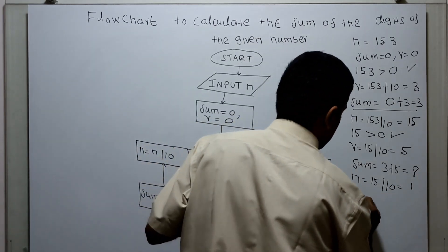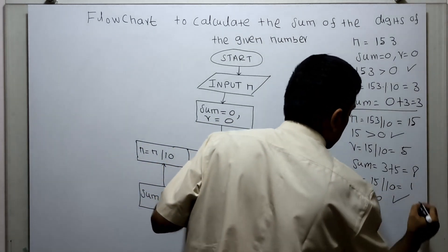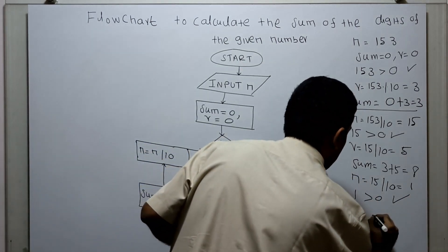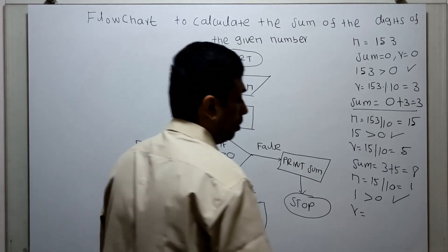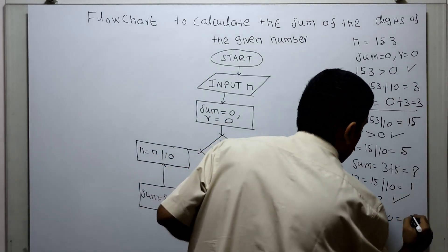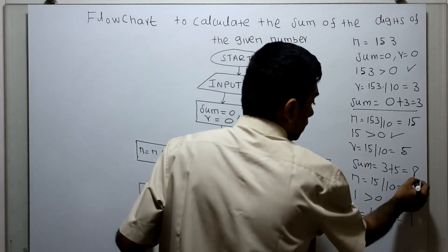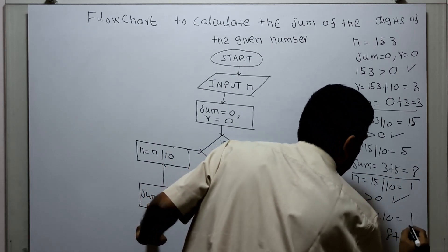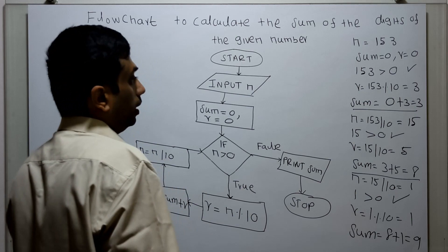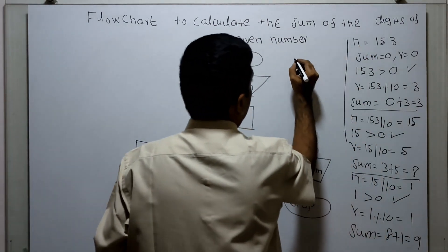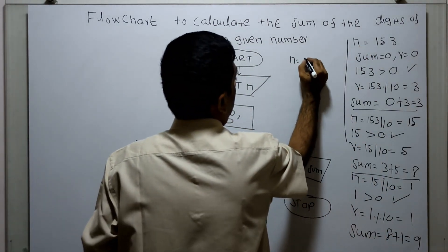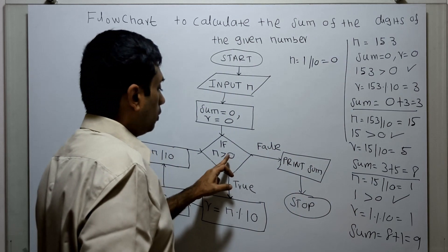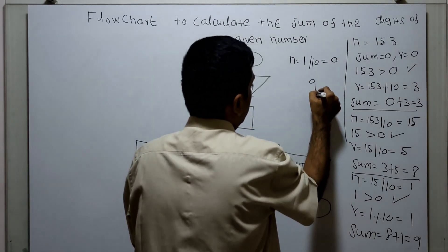1 greater than 0 is true. r equal to n mod 10 — 1 mod 10 equals 1. Sum equal to sum plus r equals 9. Then n equal to 1 divided by 10 — integer division gives 0.1, which becomes 0. Now 0 greater than 0 is false, so it will print the sum. The sum 9 gets printed — 9 is the output.